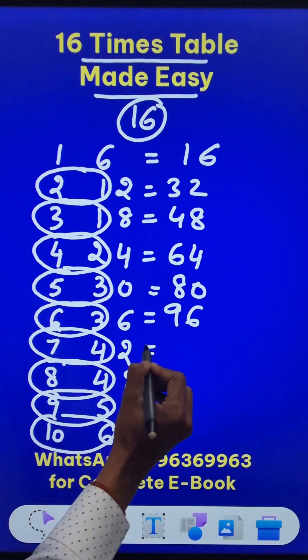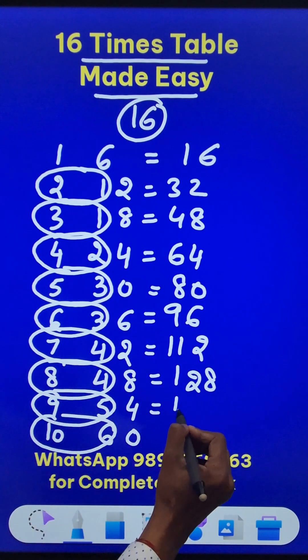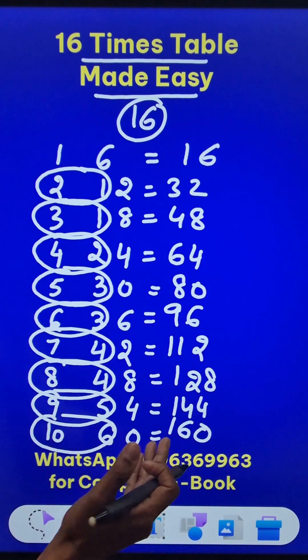7 plus 4 is 11 and the 2, 8 plus 4 is 12 and the 8, 9 plus 5 is 14 and the 4, and finally 10 plus 6 is 16 and the 0. And here you have the 16 times table.